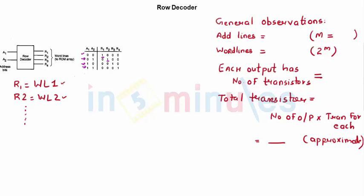Let's do some general observations. How many address lines are present in this row decoder? See, there are two address lines, A1 and A2, so m equals 2. How many output lines or word lines? We're going to call it 4, so this is 2 raised to m, that is 2 raised to 2, which is 4.